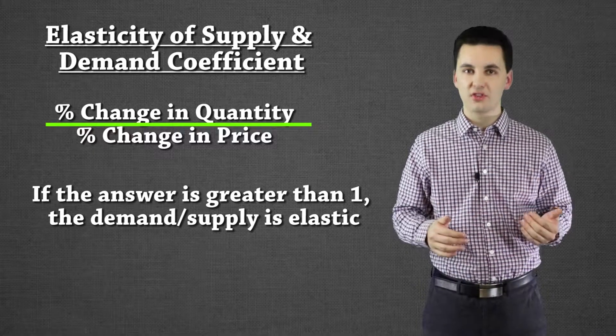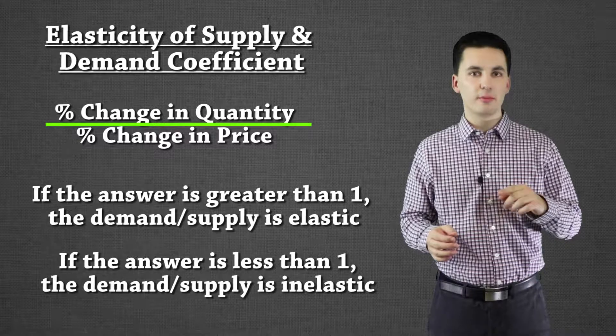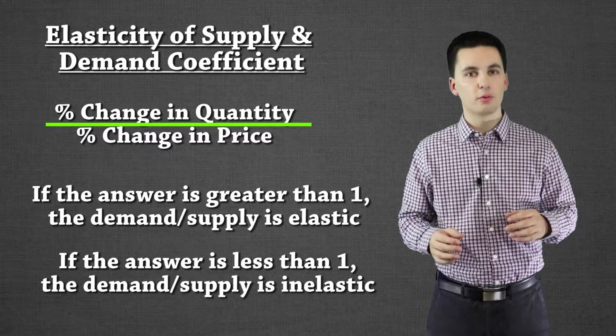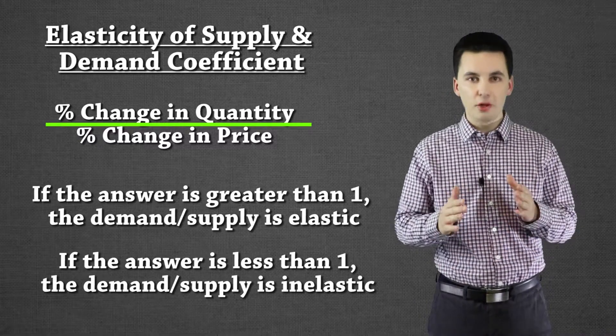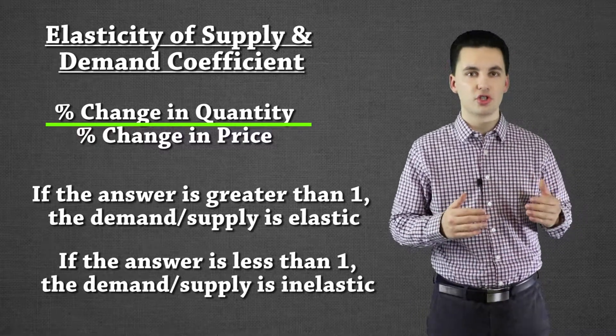What happens though if it's going to be less than 1? If our answer is less than 1 we're going to have an inelastic demand or supply depending on which one we are trying to figure out. The smaller that number, the smaller the change percent in quantity in relation to the change in price.